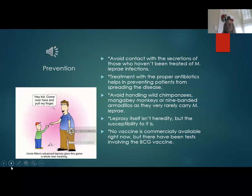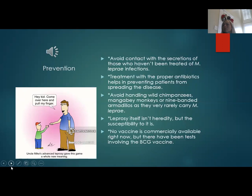The best method to prevent leprosy is to avoid physical contact with those infected by M. leprae. You should avoid handling wild chimpanzees, mangabey monkeys, or nine-banded armadillos, as they very rarely carry M. leprae. Leprosy itself isn't hereditary, but the susceptibility to it is. No vaccine is commercially available right now, but there have been tests involving a BCG vaccine.